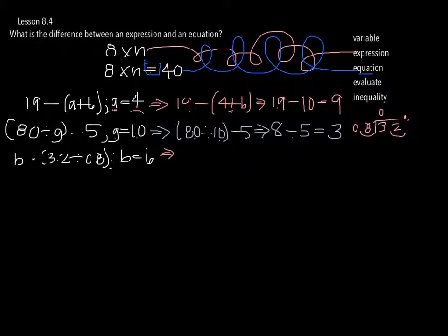How many times does 8 go into 3? 8 into 32 is 4. Multiply that out, 32, subtract. So now I'm going to plug in b, which is 6 times 3.2 divided by 0.8, and I've already done that math. So it's 6 times 4, and I'm going to get 24.